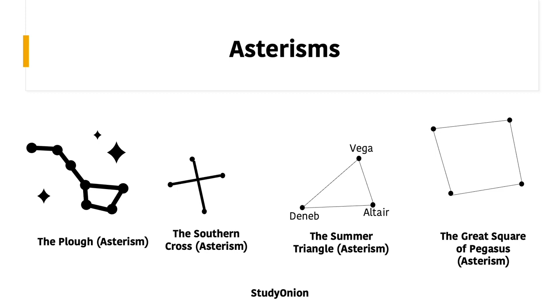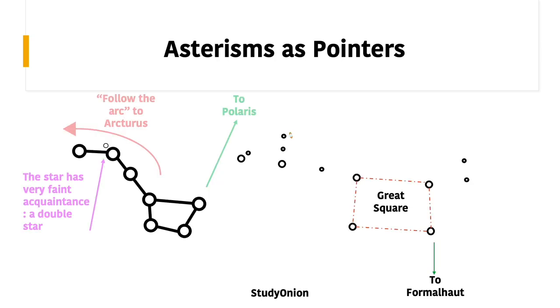The final asterism you might need to know is the Great Square of Pegasus. The name gives you a great clue, because the asterism generally looks like a square.